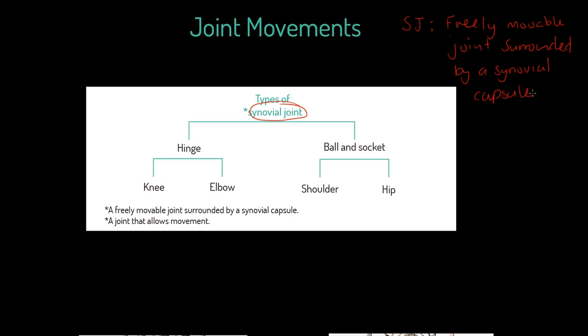It's a joint that allows movement. The freely movable nature is clear from the movement side. One way to understand a freely movable joint is to understand there are non-freely movable joints. We have slightly movable joints or cartilaginous joints in the spine.